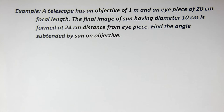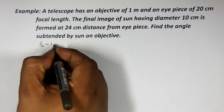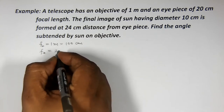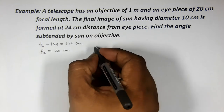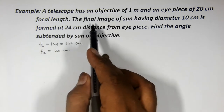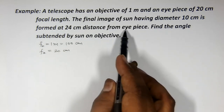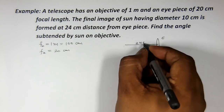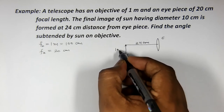A telescope has an objective of 1 meter and an eyepiece of 20 cm focal length. Objective ki focal length fo = 1 meter yani 100 cm, aur eyepiece ki focal length 20 cm. The final image of the sun having diameter 10 cm is formed at 24 cm from the eyepiece. So the diameter of the sun's image given to us is 10 cm.